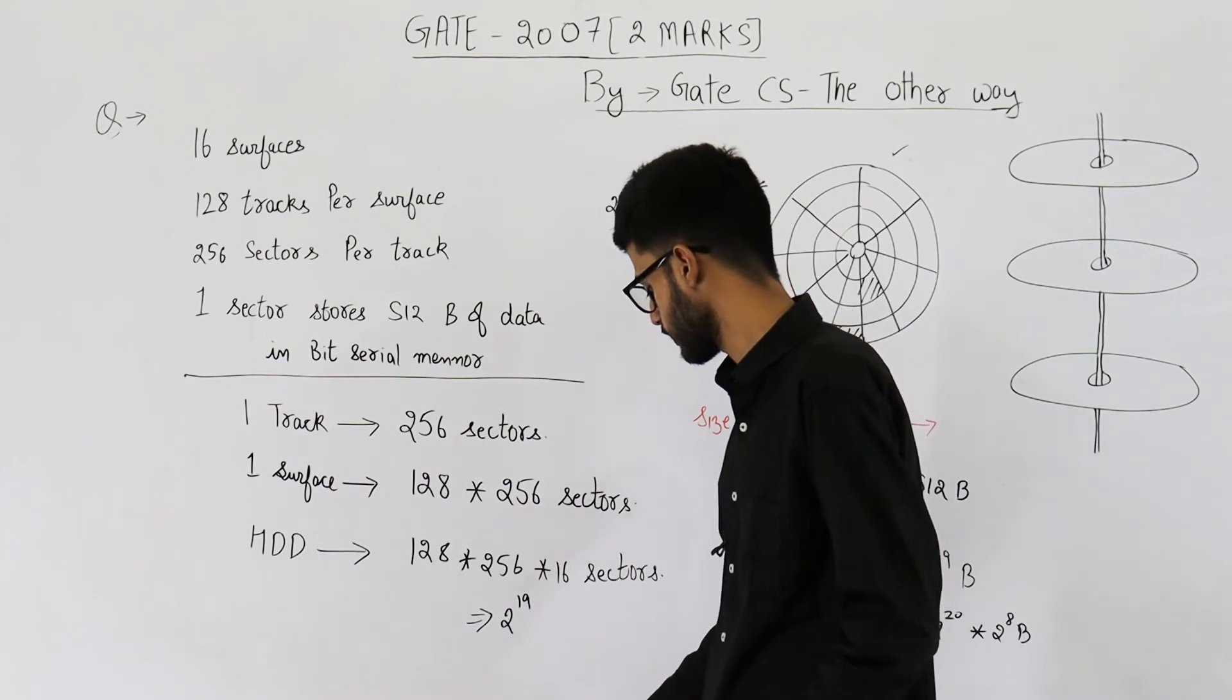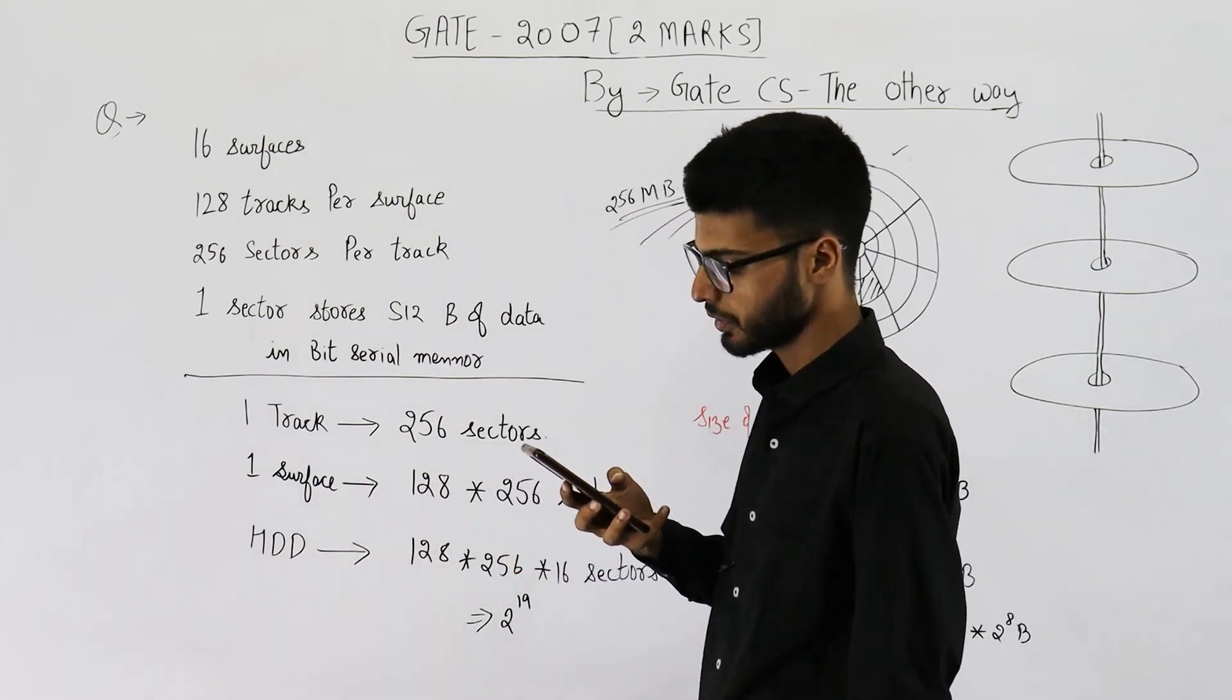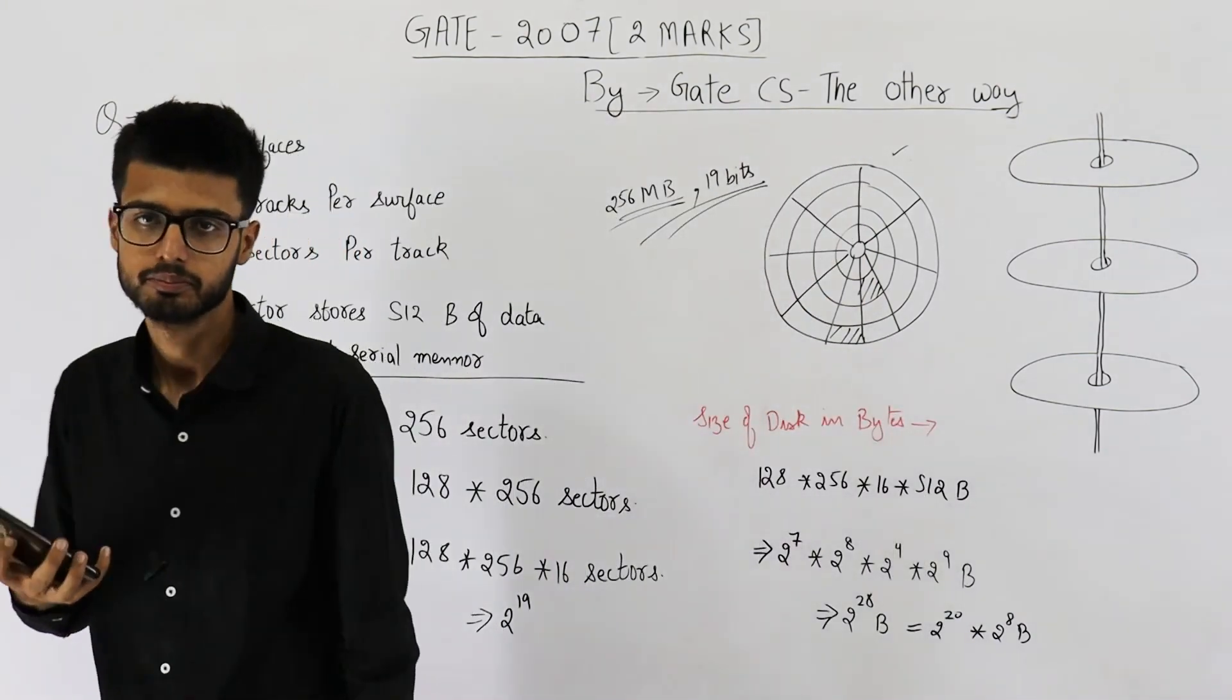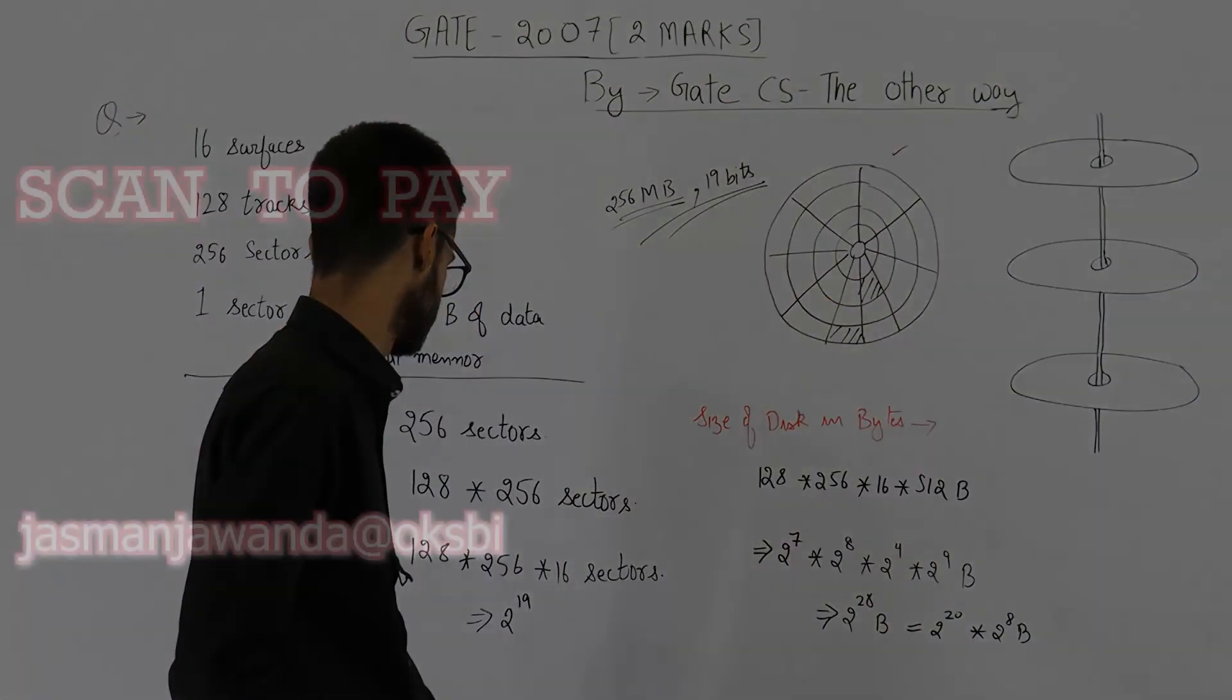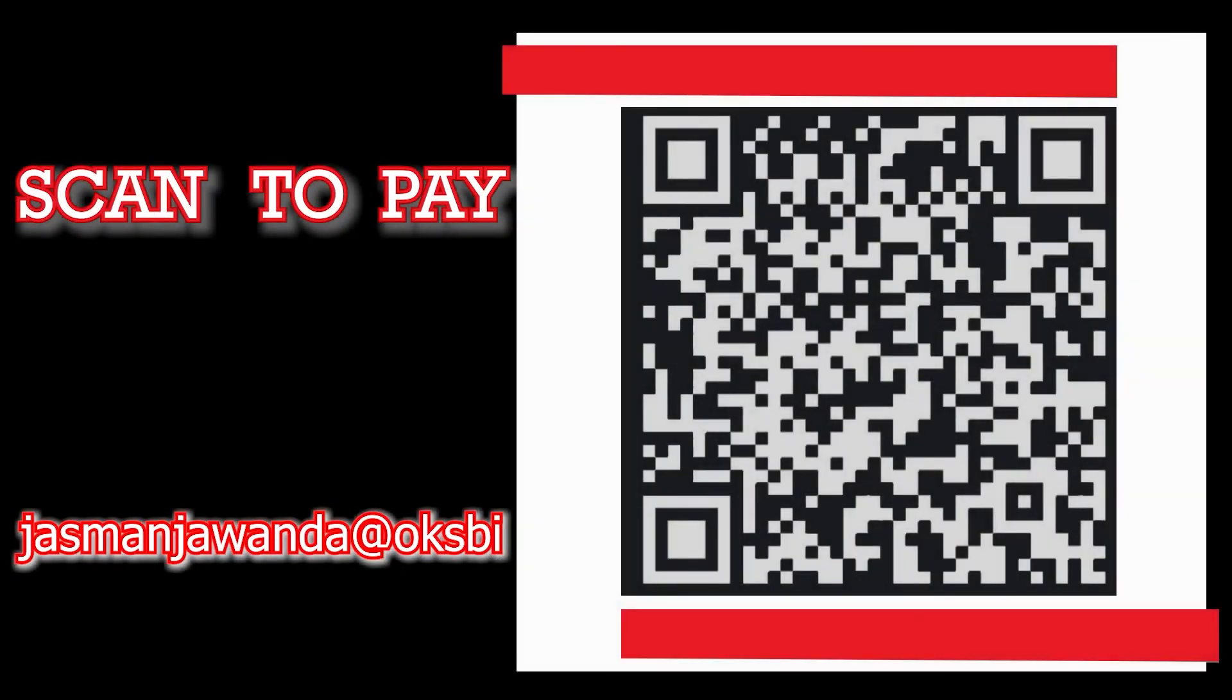Let me see if it's present in the options. Yeah, option A says 256 MB, 19 bits.